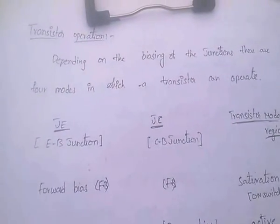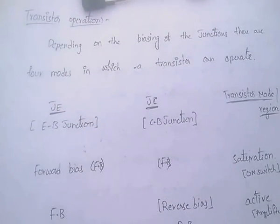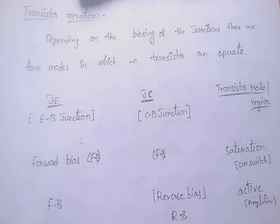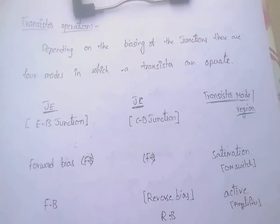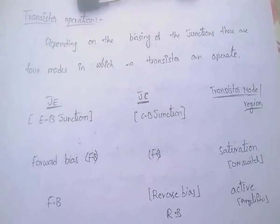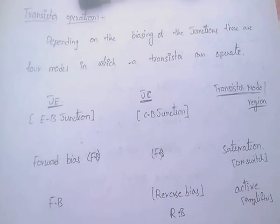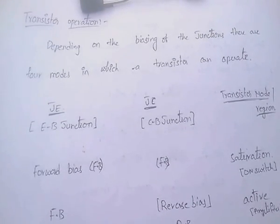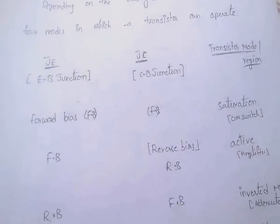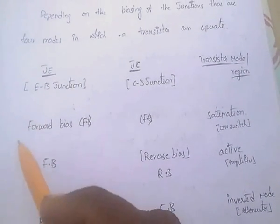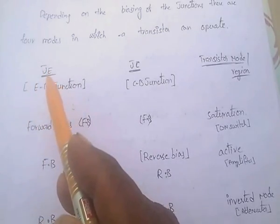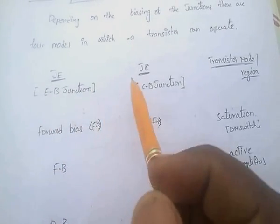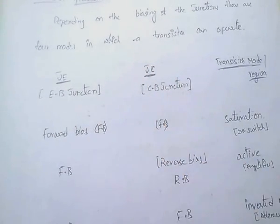Coming to transistor operation, depending upon the biasing of the junction, there are four modes. Biasing means giving supply to get proper output. The transistor has two junctions: the emitter junction (JE) between emitter and base, and the collector junction (JC) between collector and base.